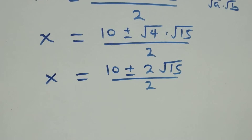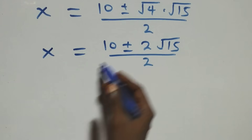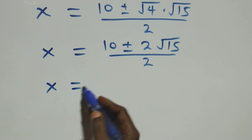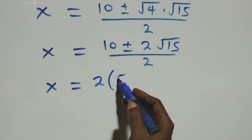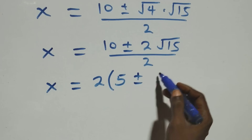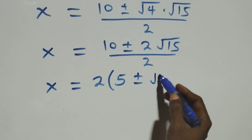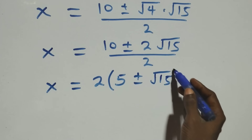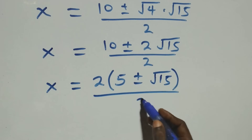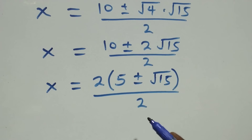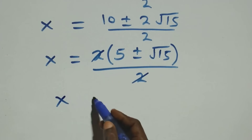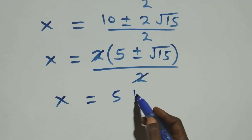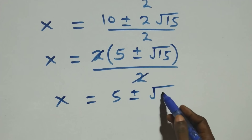We factor two from the numerator: x equals to two times (five plus or minus root fifteen), all over two. The two cancels, leaving x equals to five plus or minus root fifteen.